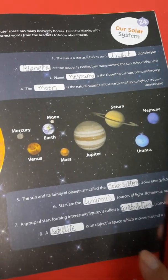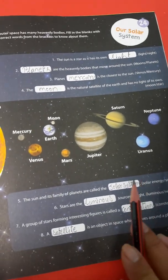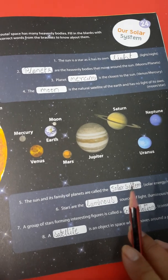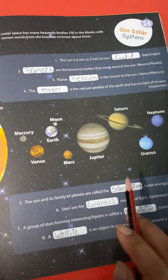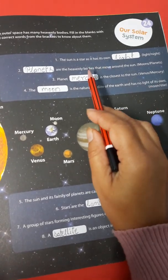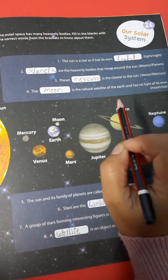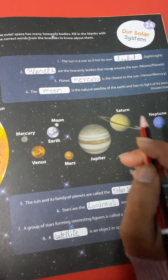Okay, children. You do this exercise in your textbook. Read and memorize it. Okay?